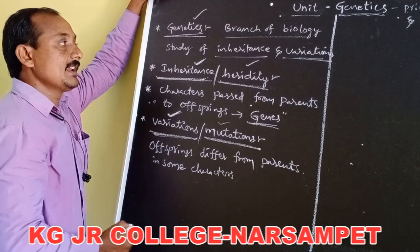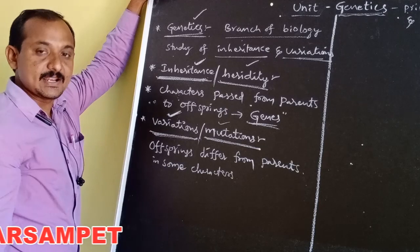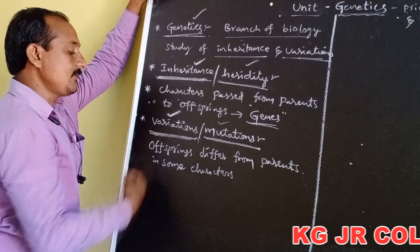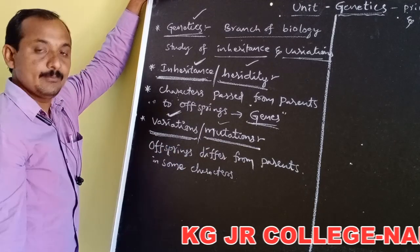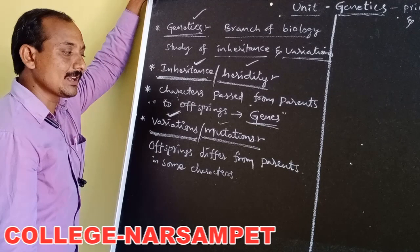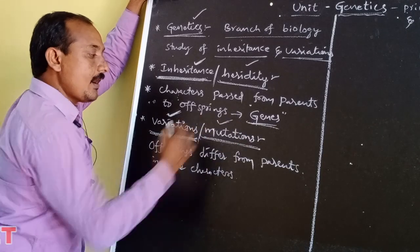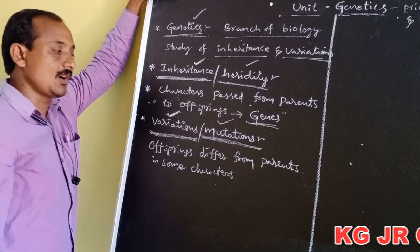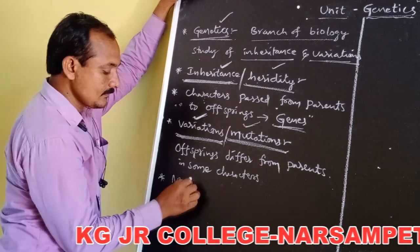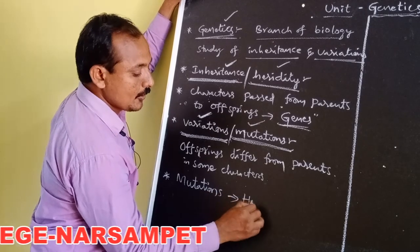Genetics is a branch of biology that deals with the study of inheritance. Inheritance means characters passing from parents to offspring through genes. Variations means offspring differ from parents in some characters. Mutations are sudden changes in an organism leading to changes in physical appearance. Mutations were first discovered by Hugo de Vries.